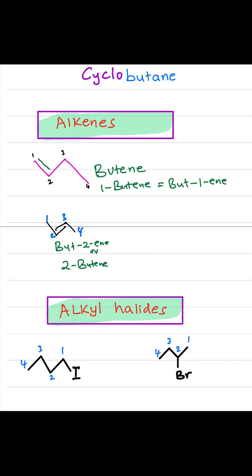Next, we look at alkenes. Alkenes contain a double bond — a carbon-carbon double bond — and the name ends with E-N-E. So remember, alkanes was A-N-E, now alkene is E-N-E, meaning a double bond. An example has 1, 2, 3, and 4 carbons, so we say bute, and because it's an alkene, it ends with E-N-E. Because the double bond is on the first carbon, we say 1-butene, or just butene.